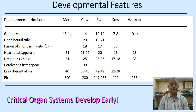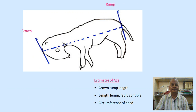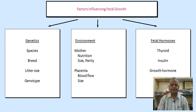These are the developmental features: germ layers are formed by days 13–14 in mares and day 14 in cows. By ultrasonography, different developmental landmarks can be seen across animal species. Ultrasonographic evaluation of crown-rump length — measuring from the crown to the rump — helps estimate fetal age.